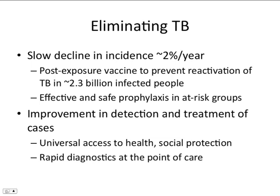TB incidence remains high in many parts of the world and is falling at a rate of only 2% per year globally. Reaching the global target of TB elimination by 2050 — defined as less than one case per million population — will require a strategy to prevent the disease in people already infected. Such a strategy will require a post-exposure vaccine or a safe and effective prophylactic treatment prescribed on a very large scale. In the meantime, improvements in case detection and in care will contribute to cutting the chain of transmission. Universal access to essential health services is an essential step to ensuring effective and early case detection, along with rapid diagnostics at the point of care. New vaccines, diagnostics, and more effective drugs are needed, requiring more investments in research and development and in the delivery of care.